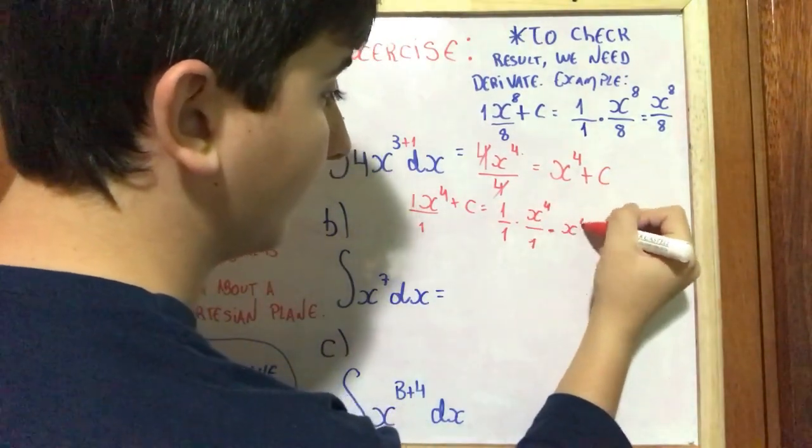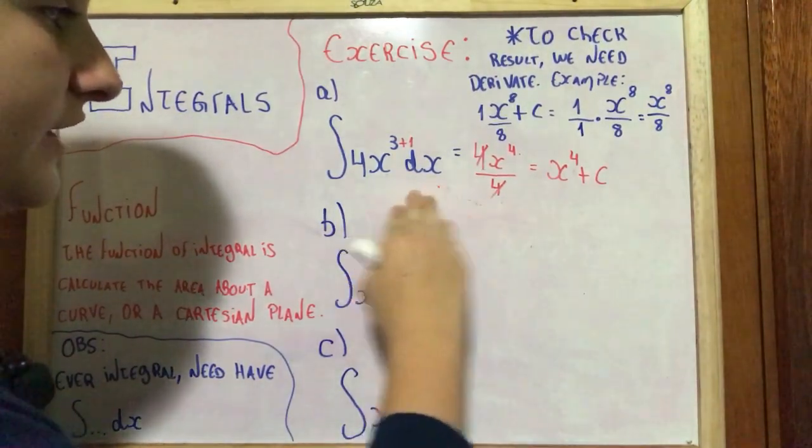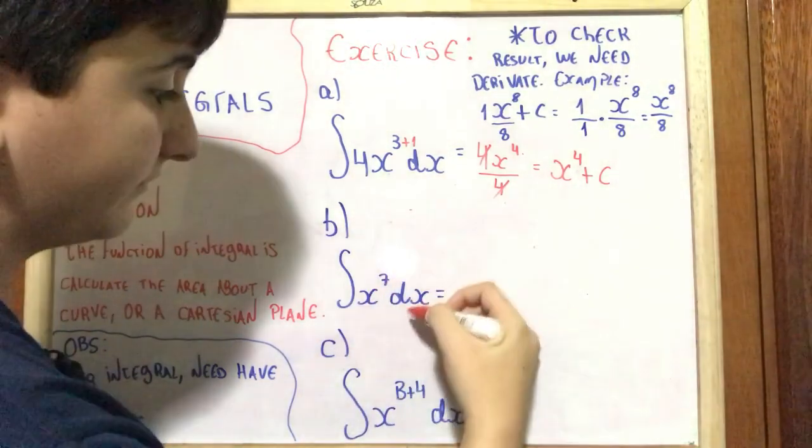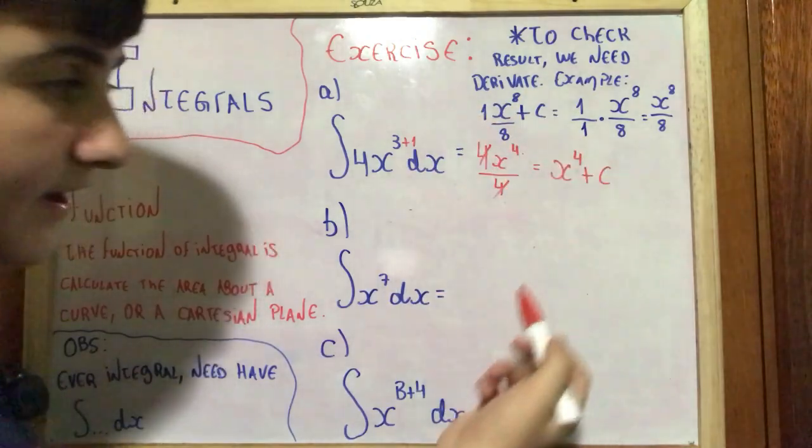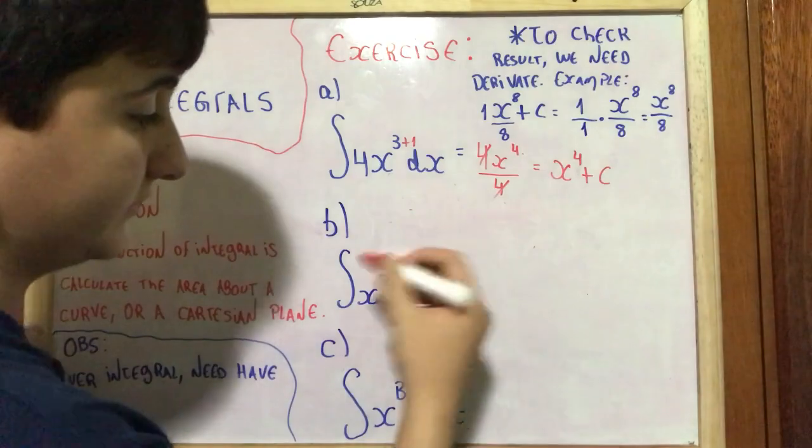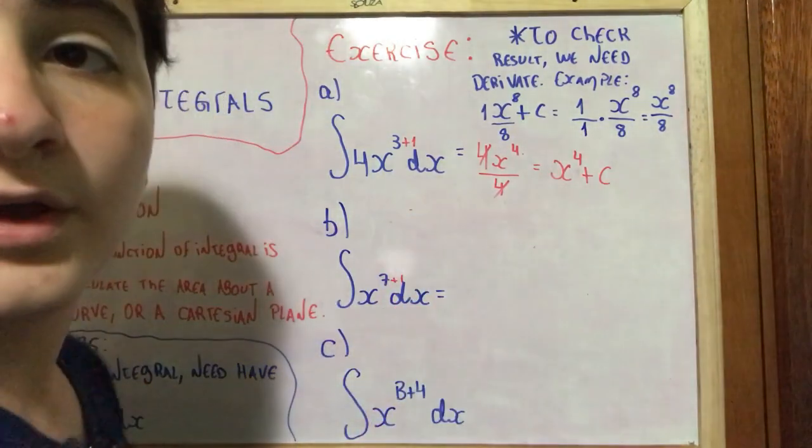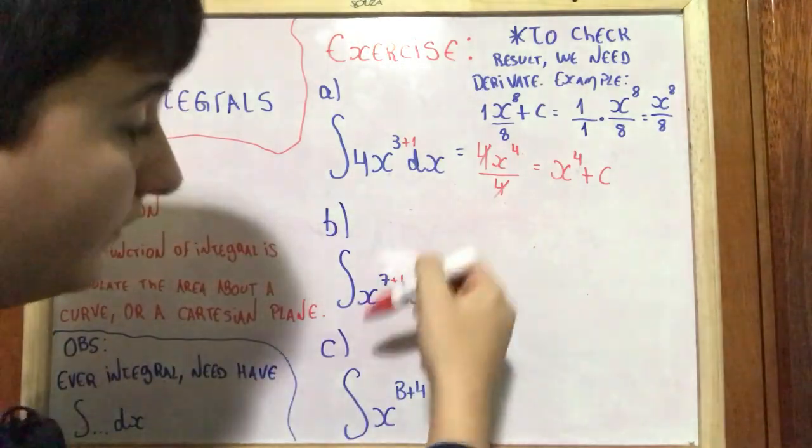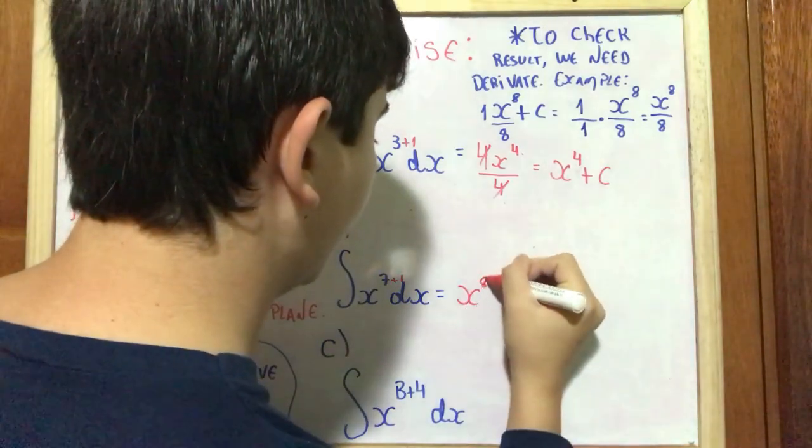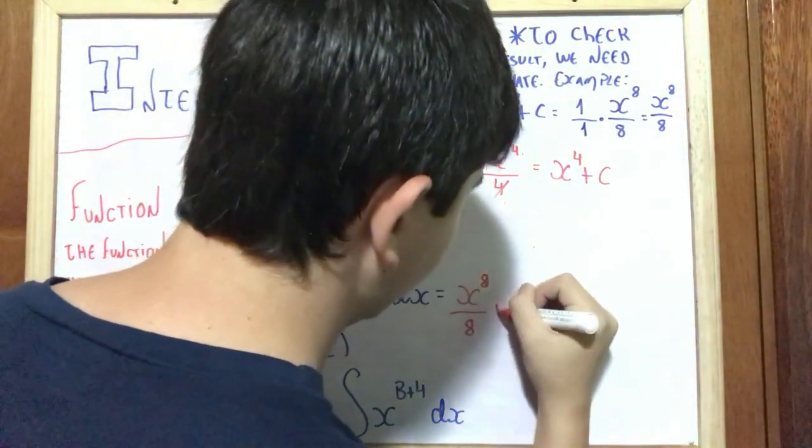Let's do exercise B. We have integral of X⁷ dx. We need to put plus 1 here, and then for a lot of integrals, the formula to solve is put 1 and X⁸ divided by, X⁸ divided by 8 plus constant.